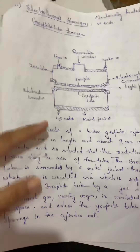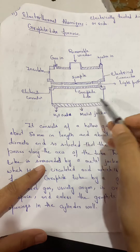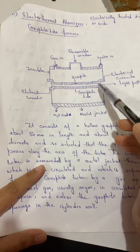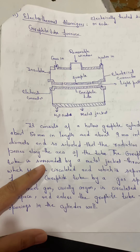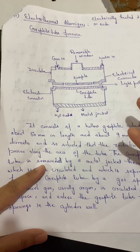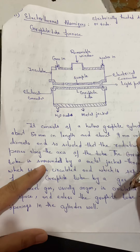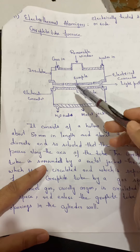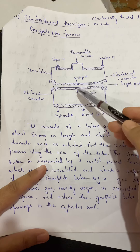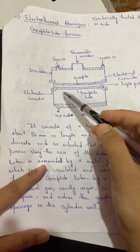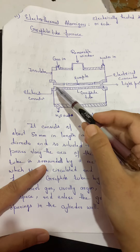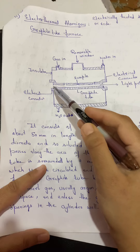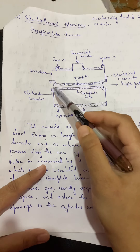Here I have drawn a schematic diagram of an electrothermal atomizer. This is not exactly how the instrument looks, but it shows the main components and how they are arranged. The electrothermal atomizer basically consists of a graphite tube in the center — this is the main part where all the action takes place.